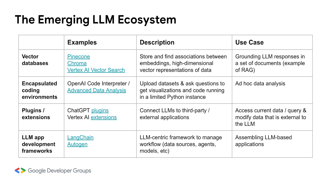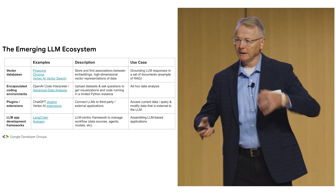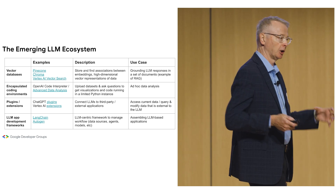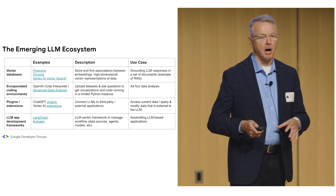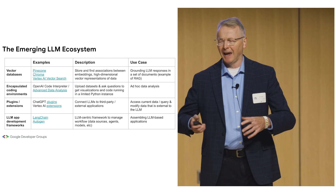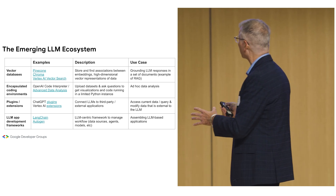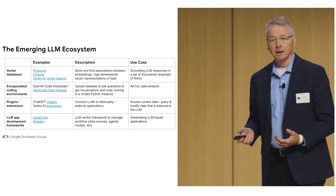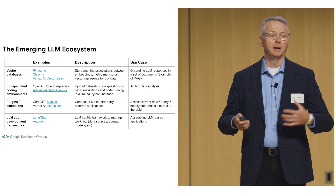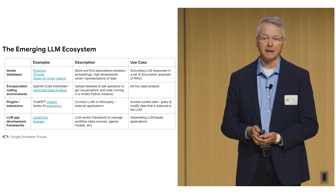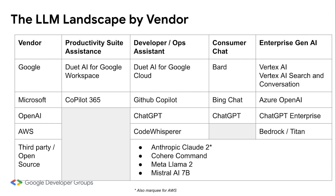Plugins and extensions provide the ability to call out to third-party APIs. And then development frameworks — this is really big. LangChain is an open source framework that makes it easy to cobble together all the pieces that make up a large language model-based application: the data sources, the models, the responses, and compensating for some of the limitations of large language models. It makes it easy to put together an end-to-end LLM-based application.